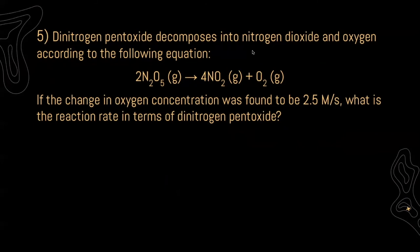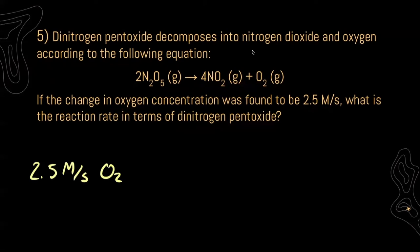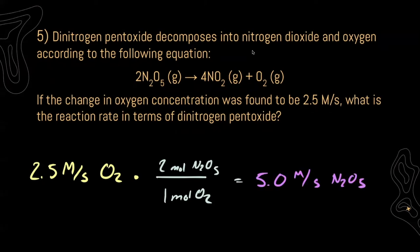For five, dinitrogen pentoxide decomposes into nitrogen dioxide and oxygen according to the given equation. If the change in oxygen concentration was found to be 2.5 molar per second, I need to find the reaction rate in terms of dinitrogen pentoxide. Starting with 2.5 molar per second of oxygen and using the balanced chemical equation, for every one mole of oxygen I use up two moles of dinitrogen pentoxide, giving a reaction rate of 5.0 molar per second in terms of dinitrogen pentoxide.